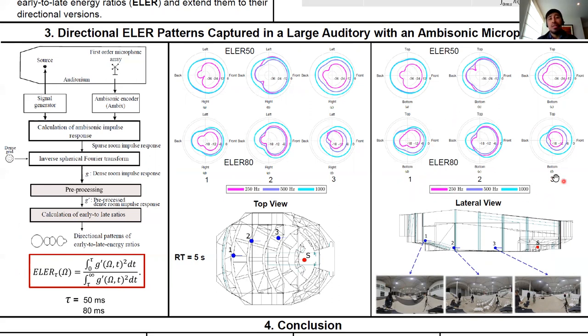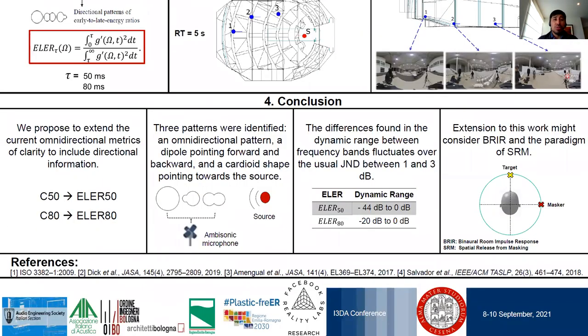As an example, we can see in the receiver one that the ELERs index present a low in the back part of the pattern due to the proximity to the back wall of the auditorium.